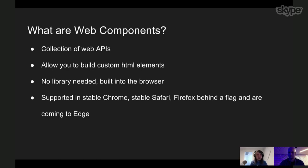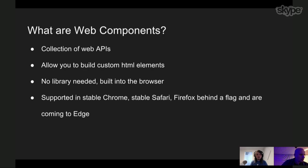Web Components V0 was the spec for a long time but never really made it outside of Chrome — Shadow DOM was slow, et cetera. So browsers went back to the drawing board and came up with the Web Components V1 spec, which is newer, simpler, and faster — it just uses ES6 classes. It's in Chrome and Safari now, and it's coming very fast to Firefox. I read today on Twitter they're looking to ship Shadow DOM in Firefox 60. And it's also coming to Edge, so that covers all the major browsers.